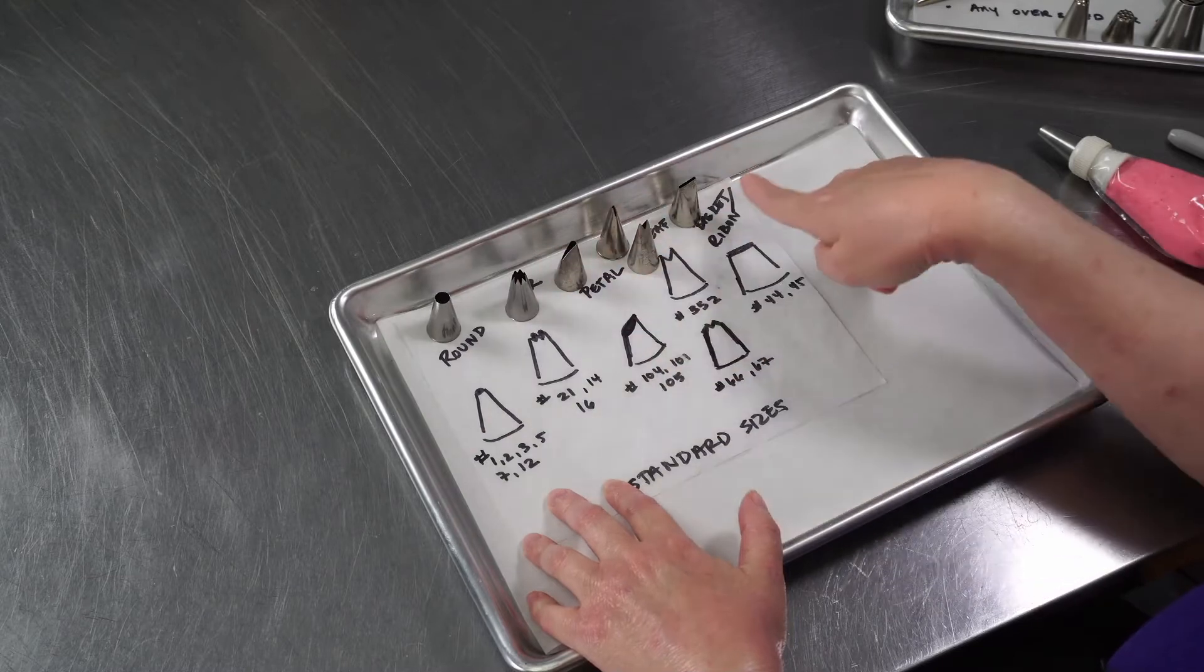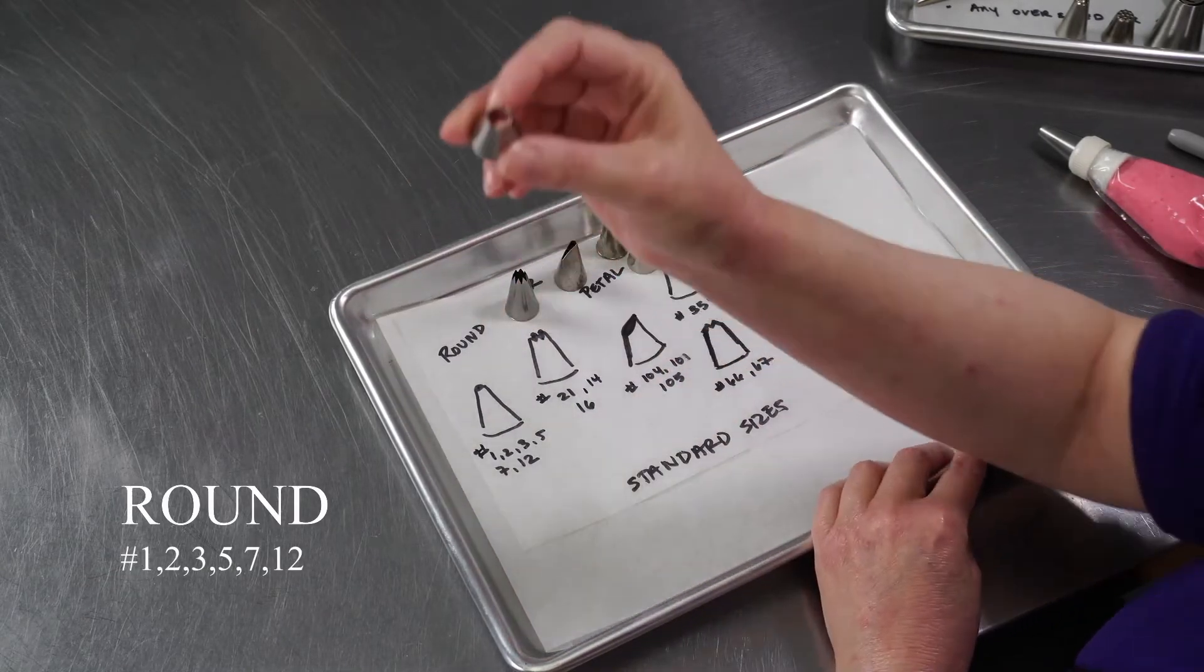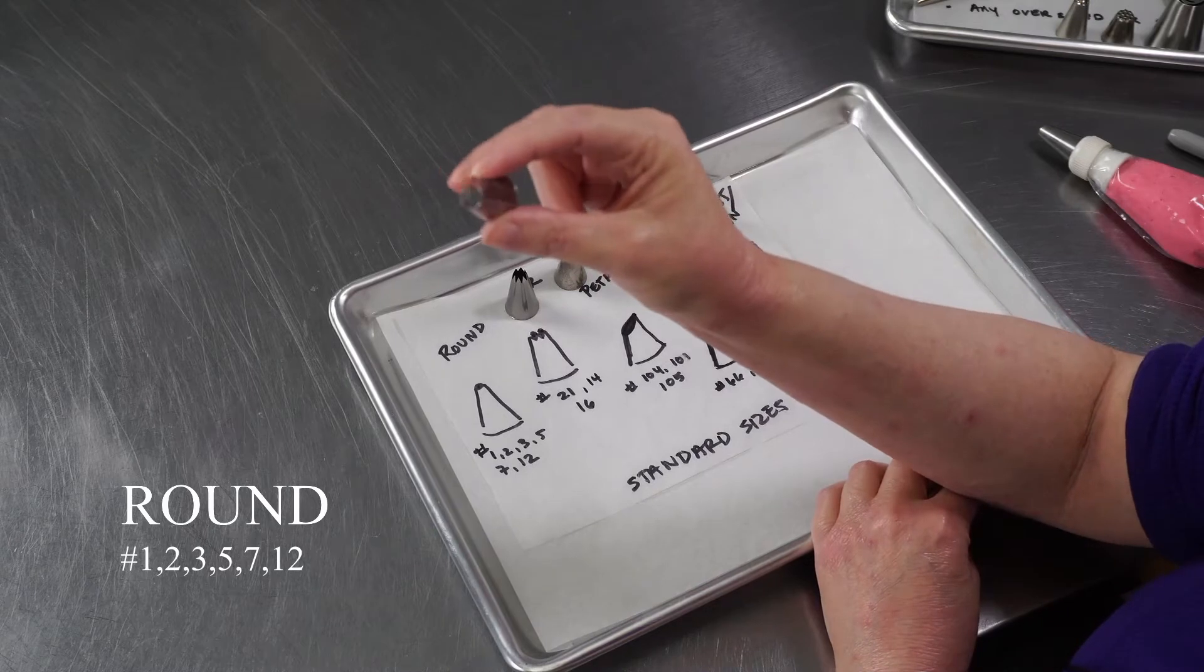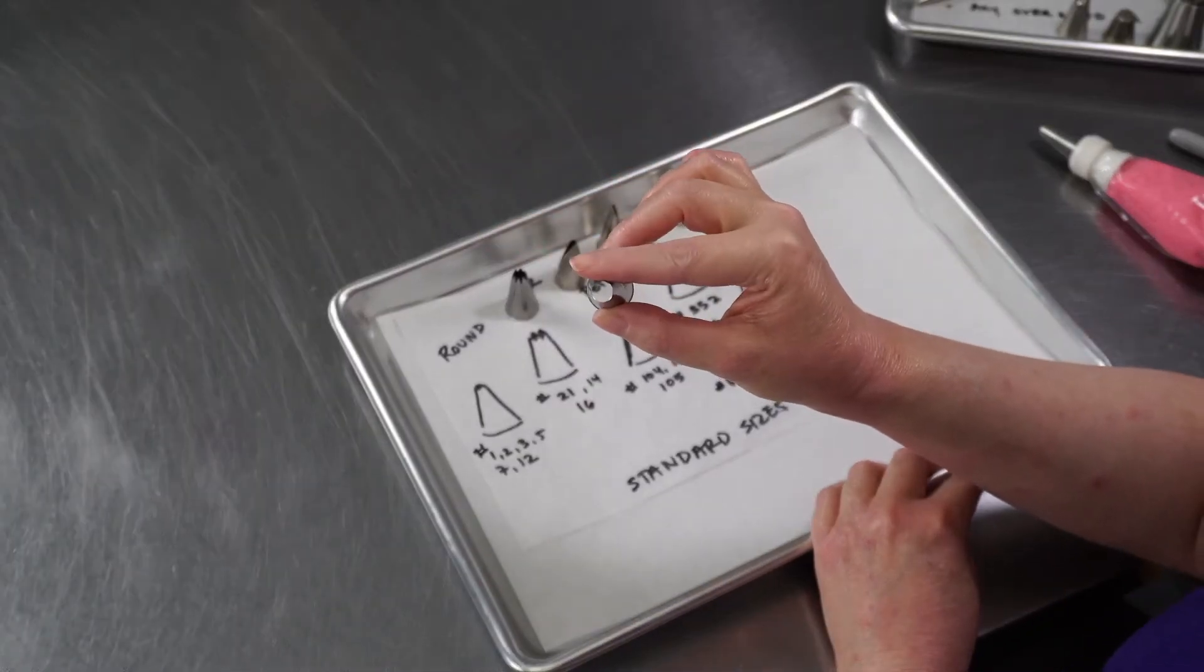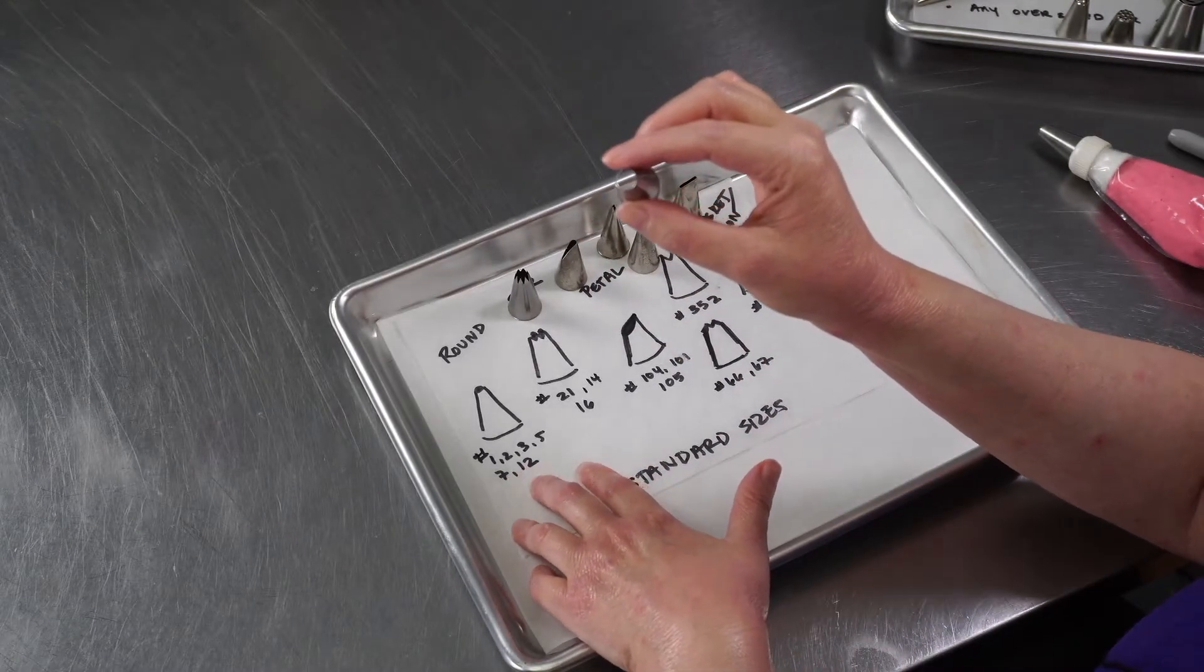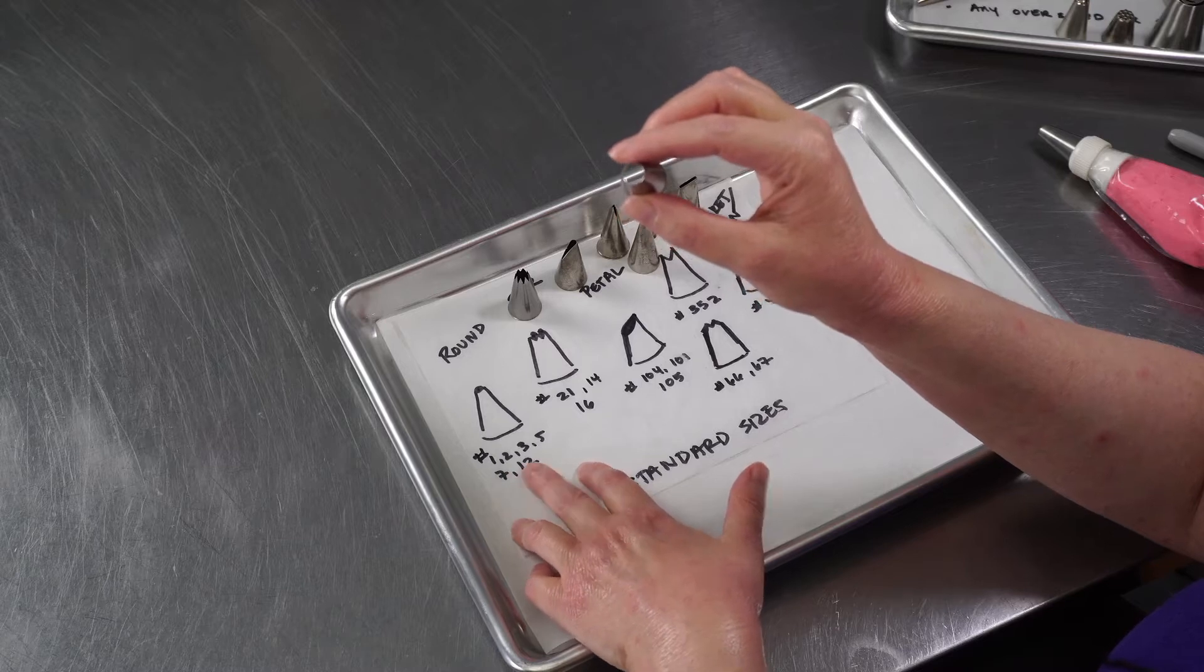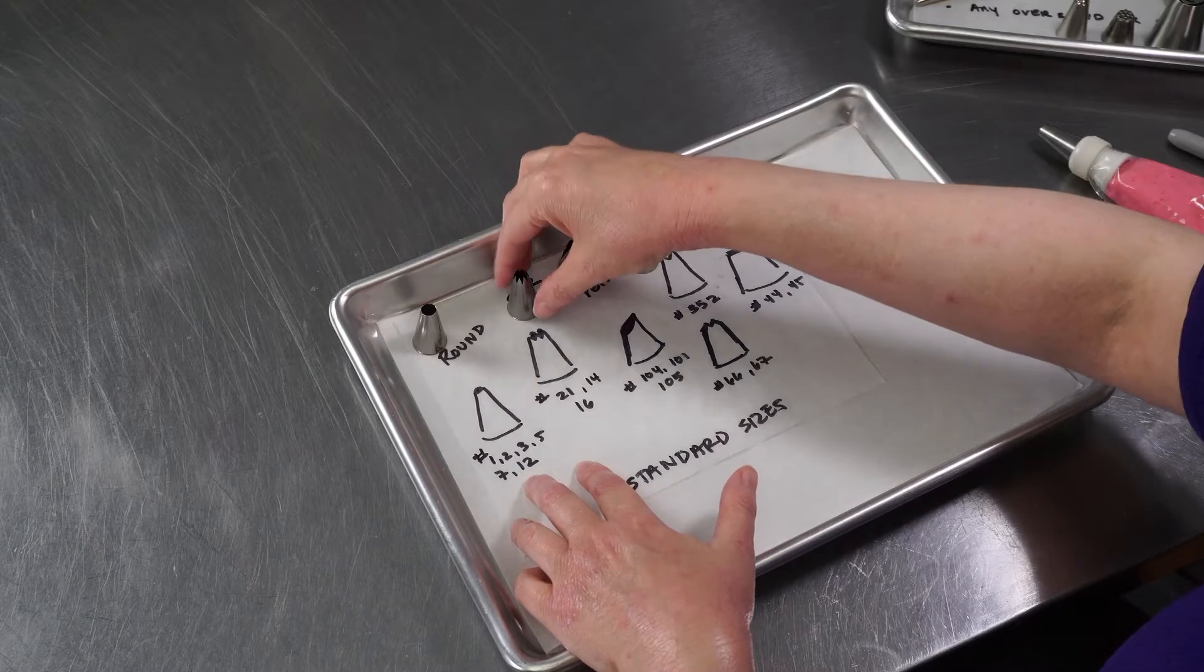We're going to go over the popular styles and some of the popular numbers. The first is a plain round tip. You can see it just has a plain round opening. This one is a number 12, it's really large. Popular numbers would be 1, 2, 3, 5, 7, and 12. Any of those will give you a nice variety for making little treats and decorations.